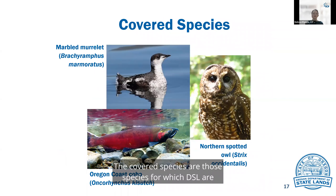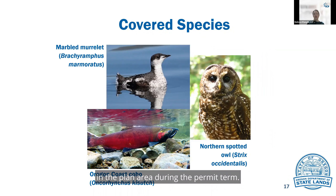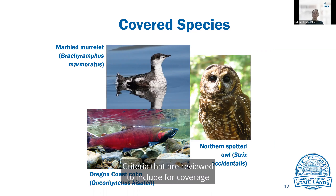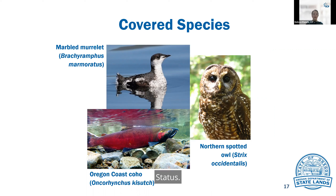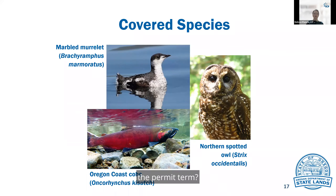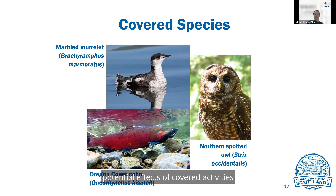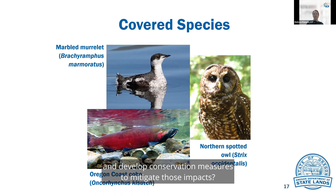The covered species are those species for which DSL is requesting take authorization from Fish and Wildlife Service and NOAA Fisheries. The covered species were selected based on a review of all species of conservation concern known or suspected to occur in the plan area during the permit term. Criteria reviewed for coverage include: range — do they occur in the permit area? — status — are they listed, proposed, or have a strong likelihood to be listed over the course of the permit term? — impact — would habitat potentially be affected? — and data — is there existing data on the species' life history, habitat requirements, and occurrence to adequately evaluate potential effects and develop conservation measures?